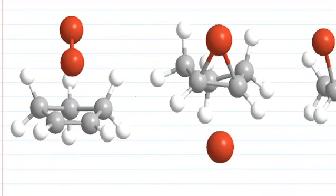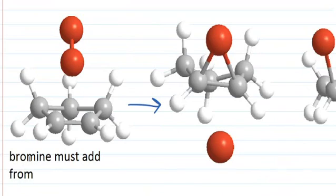Okay, so the full mechanism with 3D models would indicate that, as we see here, that bromine must add from the top or the bottom. It can only add from one of the two places at any given time.